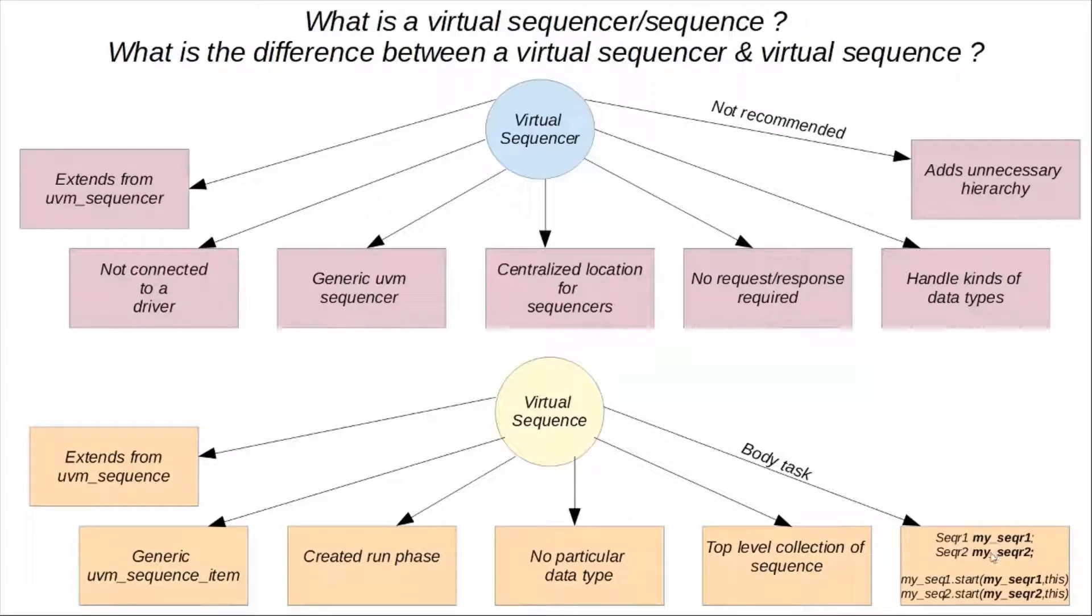However, you don't assign anything inside the sequence to these handles, right? So you don't create sequencers inside the sequence and then do the assignment. However, in the main UVM test, you will do the assignment for these handles and give them the required sequencers.